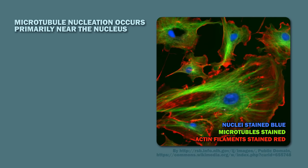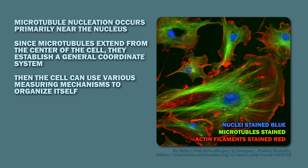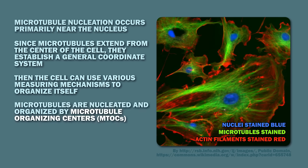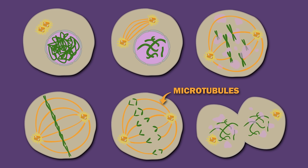Microtubule nucleation occurs primarily near the nucleus. Since microtubules extend from the center of the cell, they establish a general coordinate system, and the cell can use various measuring mechanisms to organize itself. Microtubules are nucleated and organized by microtubule organizing centers, or MTOCs. Centrosomes, containing a pair of centrioles at right angles to one another, are the primary MTOCs. They are centrally located organelles that act as the spindle pole during mitosis and meiosis, which separates the chromosomes. Rapid reorganization of the cytoskeleton occurs during cell division.